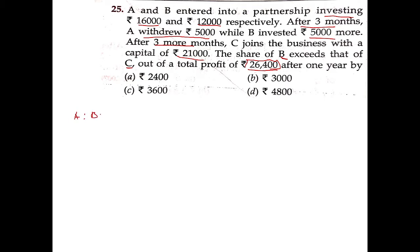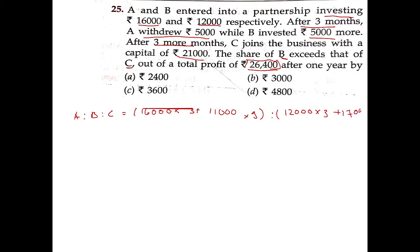So A:B:C ratios are calculated as follows. A is 16,000 multiplied by 3, plus 11,000 multiplied by 9. B is computed similarly with the adjusted investment amounts over the respective months. A comes to 48,000 + 99,000.